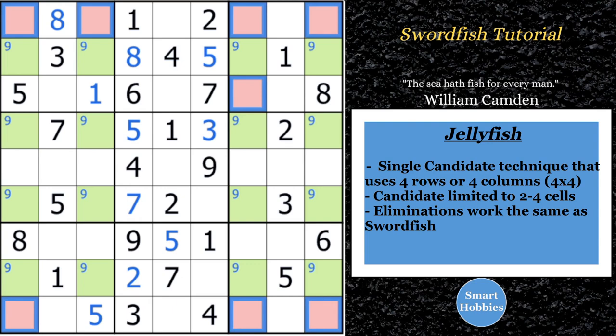From those columns. Same way it works. An X-Wing is a two by two. A swordfish is a three by three. And now this jellyfish is a four by four. But the logic is still the same. So, you can make all those eliminations and you can move on solving in this particular puzzle.